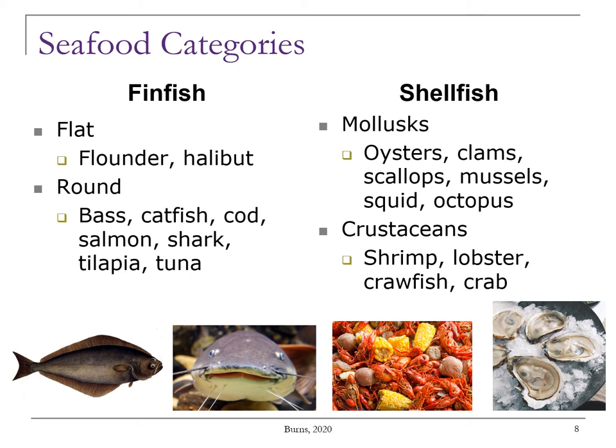Shellfish are further divided into two subcategories: the mollusks and the crustaceans. The mollusks have a soft structure and are either partially or entirely enclosed in a hard shell. Examples of mollusks include clams, oysters, scallops, and squid. Crustaceans are those that are covered with a crust-like shell and have segmented bodies — so that would be your shrimp, lobster, crawfish, and crab.